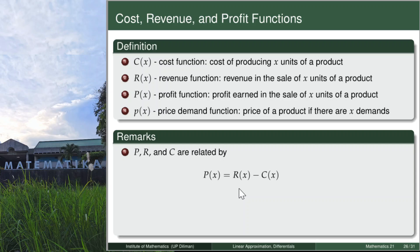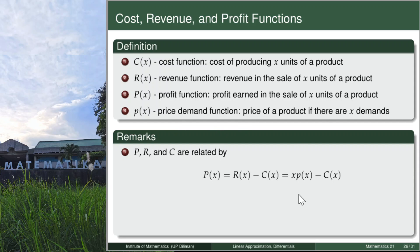In other words, profit is 'yung tinubo mo o nalugi mo.' Revenue can be computed as x multiplied by the price-demand function p. Take note that big P is for profit and small p is for the price-demand function — don't confuse them with each other.